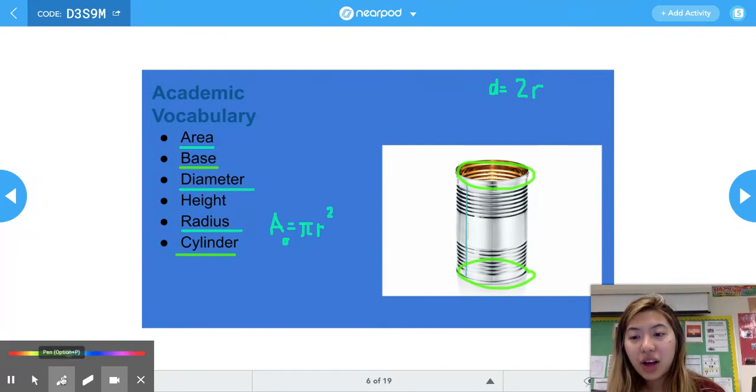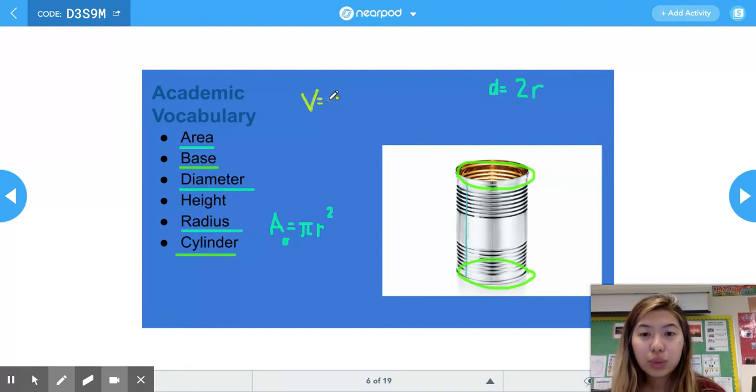Lastly, to find the volume, we have the area of a circle, which is πr², times the height of the can. So that's our last variable.